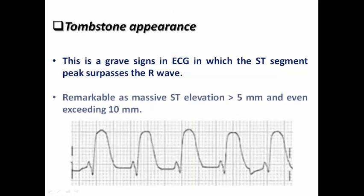Tombstone appearance is a grave sign in ECG in which the ST segment peak surpasses the R wave. This means that the magnitude of ST elevation is higher than the amplitude of the R wave or the whole complex itself. It is remarkable as massive ST elevation exceeding 5mm, and may even exceed 10mm, as you can see here in this ECG strip.